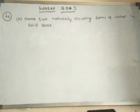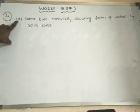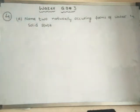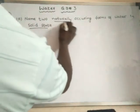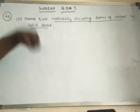In this video we will learn about questions related to water. Starting from the fourth question, which has sub-questions. The first sub-question asks us to name two naturally occurring forms of water in solid state — that means forms of water in solid state which occur naturally.